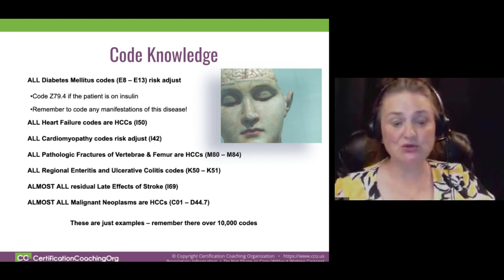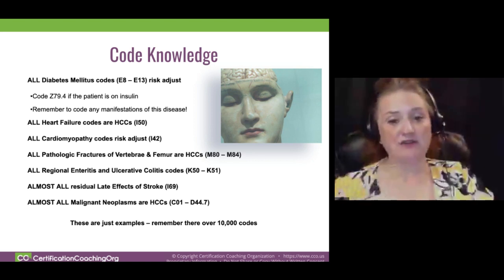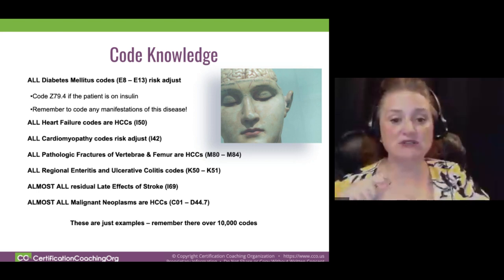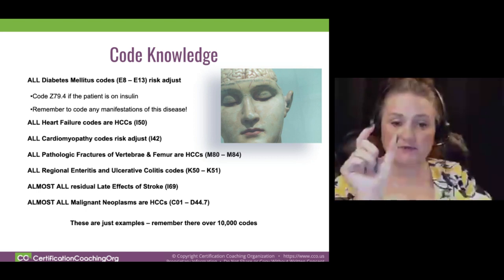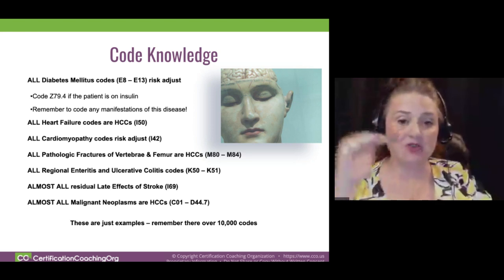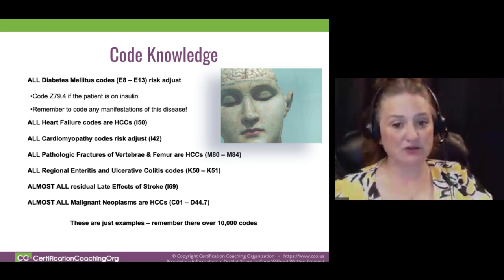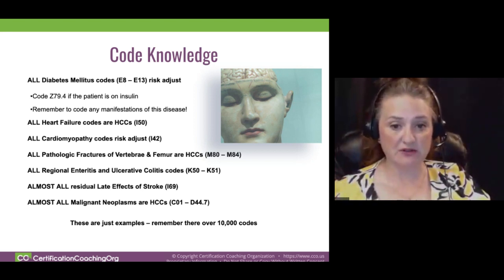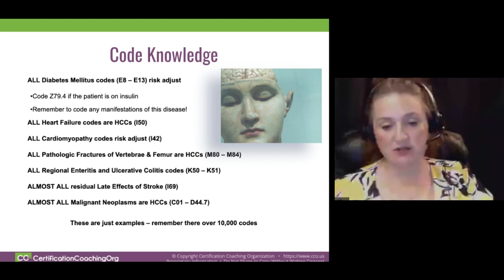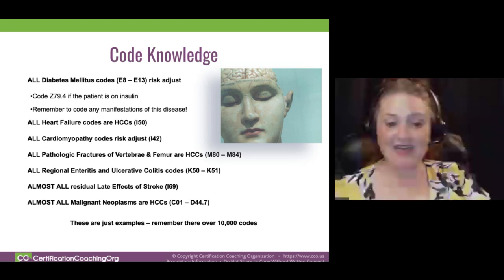Open your ICD manual to the tabular, go to I50, and scroll down to see all the different headers and what differentiates one code from another. All cardiomyopathy codes — I42 — also risk adjust. Go back a few pages after looking at the I50 CHF codes and review the I42 cardiomyopathy codes to understand them.